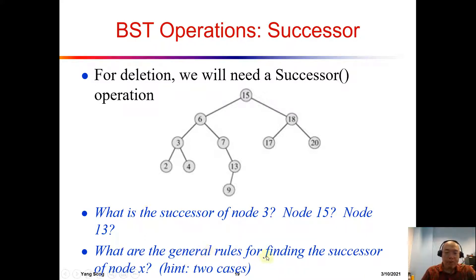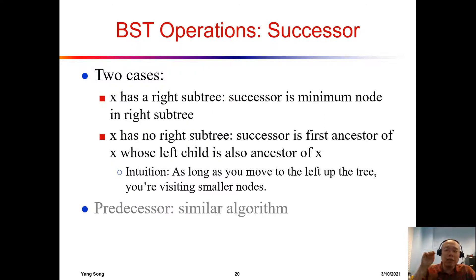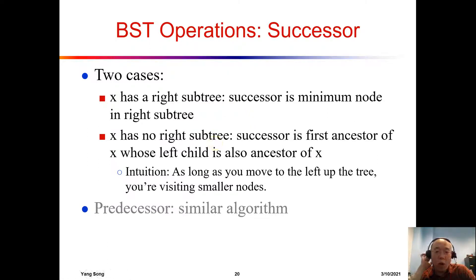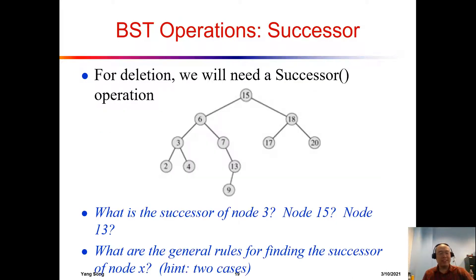What are the general rules for finding the successor of node x? There are really two cases. Number one: if x has a right subtree, you want to go to the right subtree, find the smallest value on the right subtree, and that is the successor of x. Case one is easy. But for case two, if x has no right subtree, the successor of this node will be the first ancestor of x whose left child is also an ancestor of x.